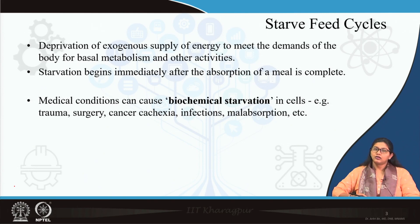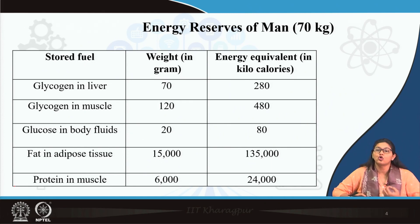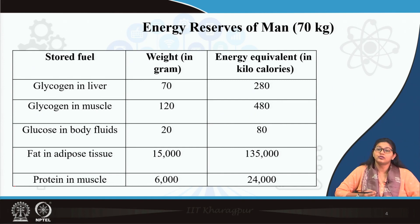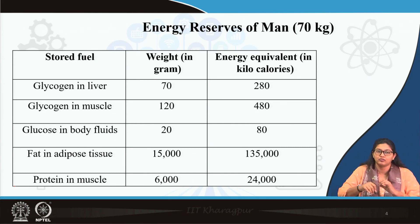When there is starvation, the body depends on stored energy, which is stored in the form of glycogen in liver and muscle, fat in adipose tissue, and proteins — most importantly in muscle. The store of glycogen is surprisingly very little compared to protein or fat in the body.